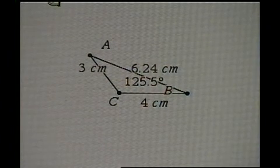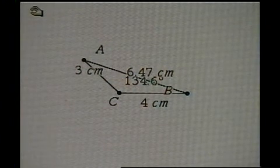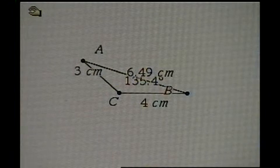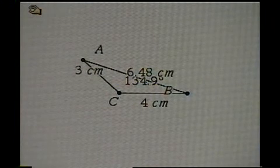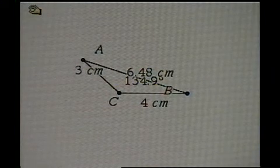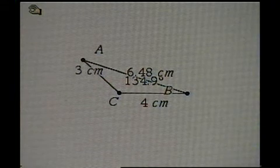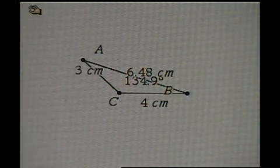Another familiar angle: 135 degrees. We're going to run into overlap problems here. 134.9 is close enough — record 6.48 for the length of side C.